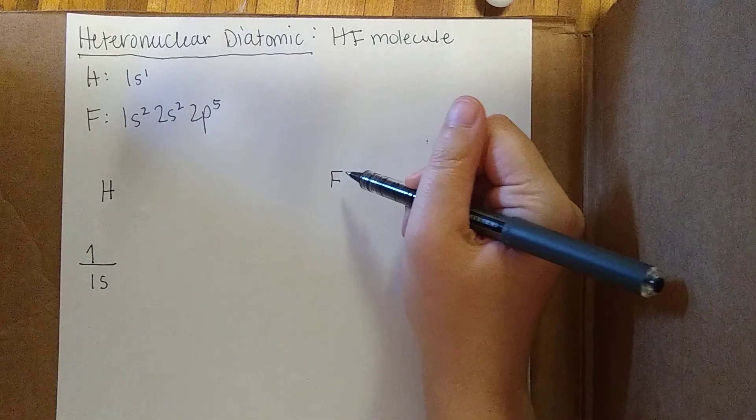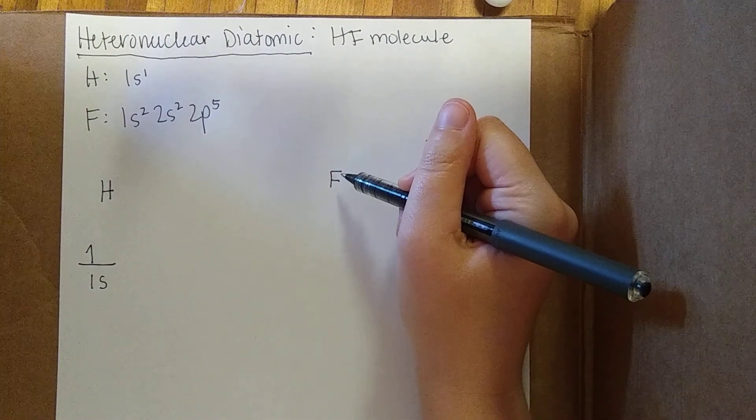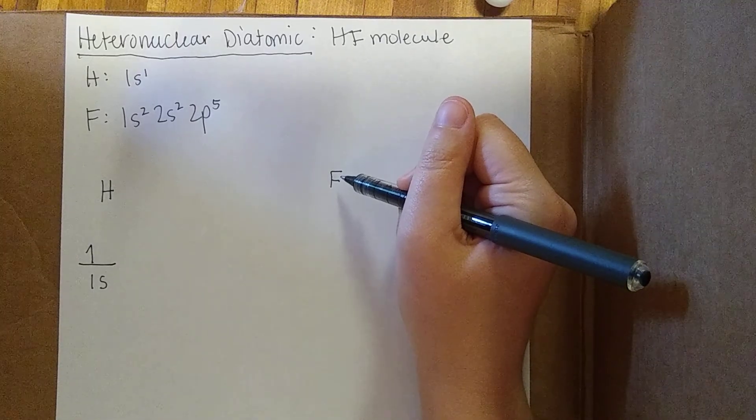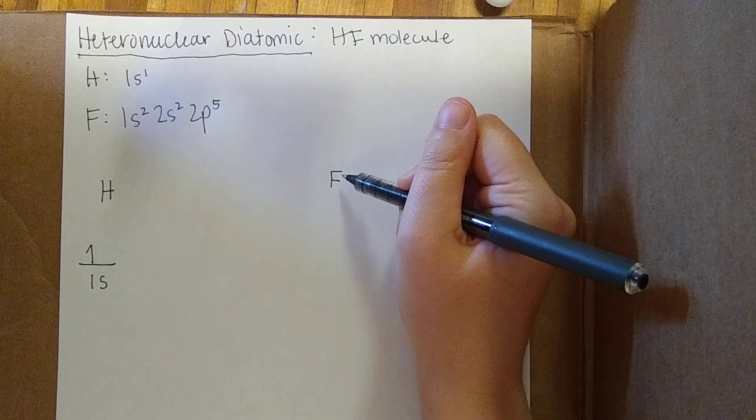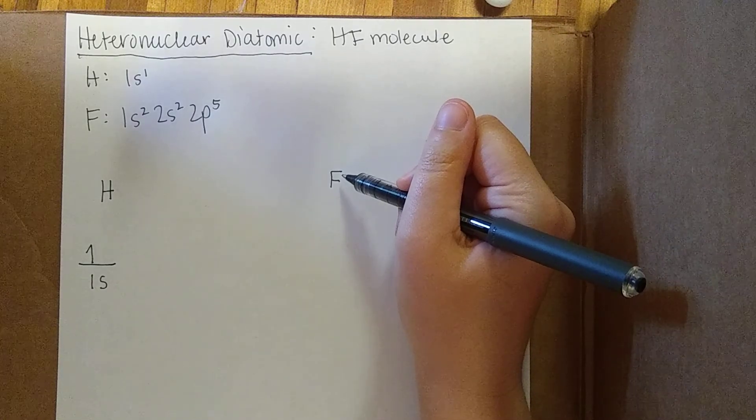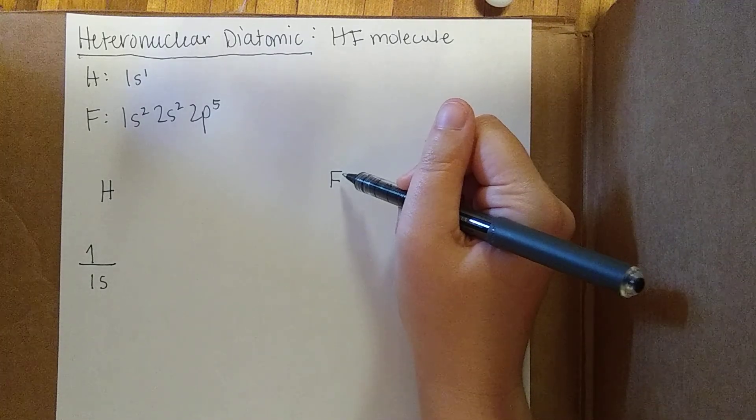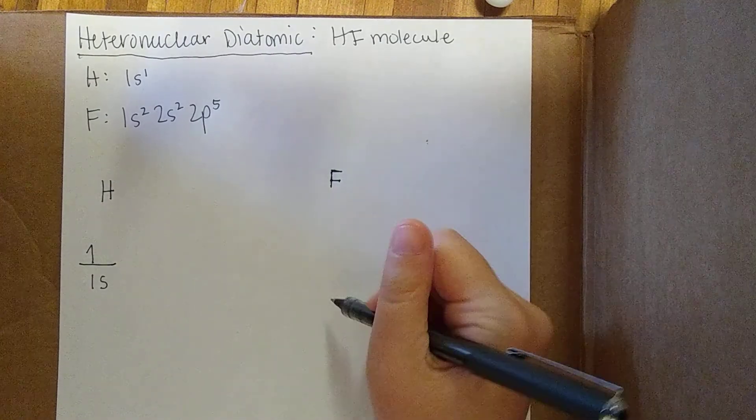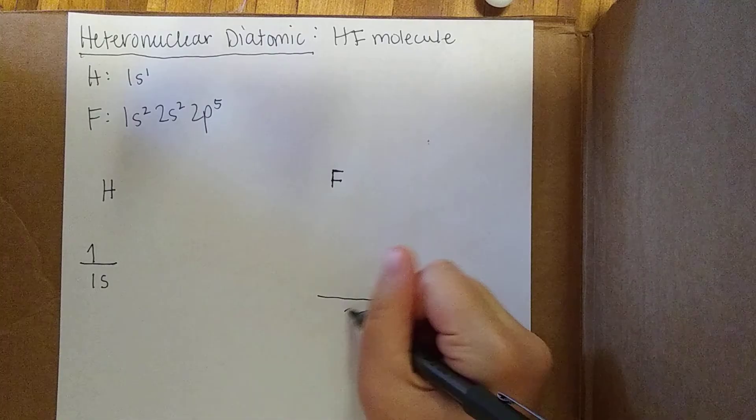Where it gets a little tricky is we have to consider the fluorine molecule now, and the first thing you need to know is that the most electronegative atom is going to have lower atomic orbitals in energy. So for the case of fluorine, we're going to begin by drawing the 2p orbitals down here.